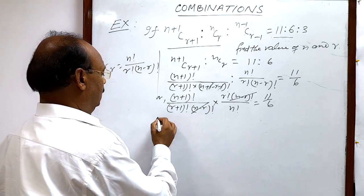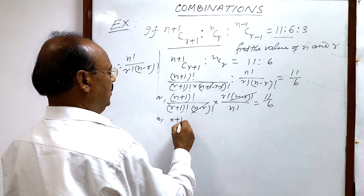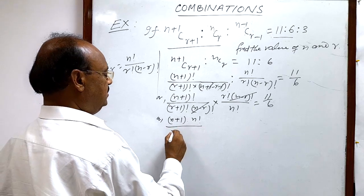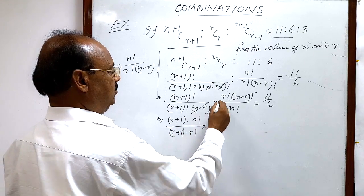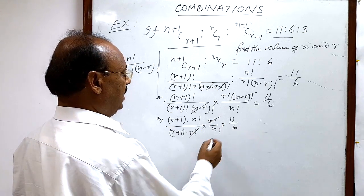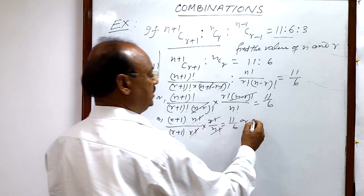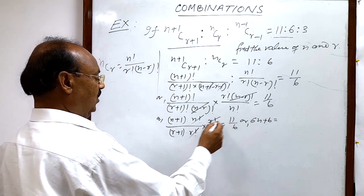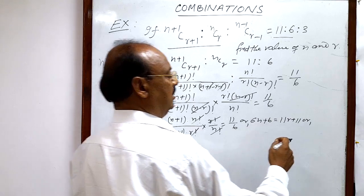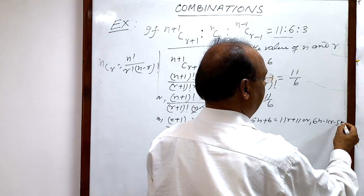We try to cancel this n factorial with (n+1) factorial: (n+1) factorial is (n+1) into n factorial. Similarly, (r+1) factorial will expand as (r+1) into r factorial. After cancelling r factorial and n factorial, by cross multiplication we get 6(n+1) = 11(r+1), which gives 6n + 6 = 11r + 11, or 6n minus 11r = 5. This is relation number 1.